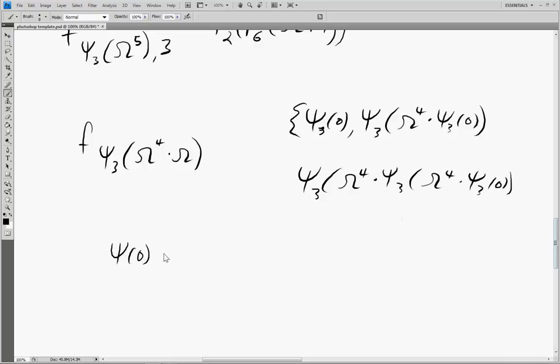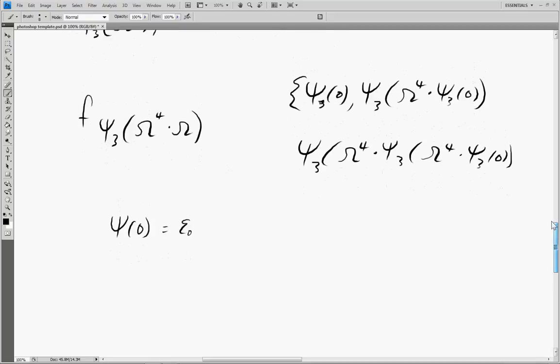The only time that we switch over to the old format is when we get to something like ψ(0), and then we turn this into ε₀, because really we have no choice. There's no smaller ordinal in terms of infinite collapsing functions, but that's the only time. This is a much neater way of deconstructing these things. So we'll do some more examples in the next video.